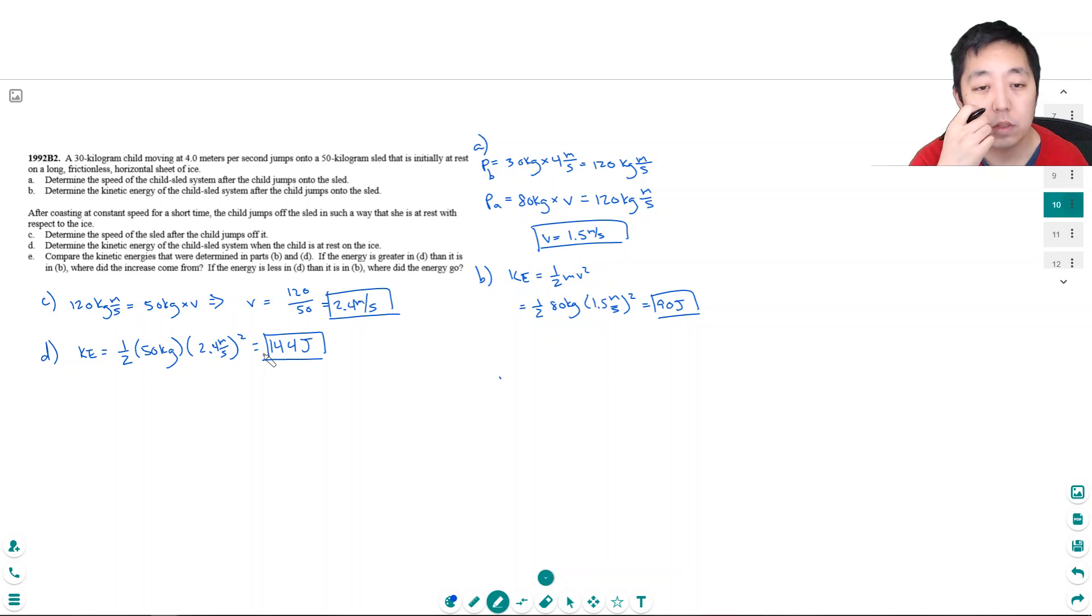If I do all the math right, 1.5 meters per second, 1.5 squared times A. So, the child's moving along and pushes off the sled in a way that now he's stopped and that accelerated the sled. The energy came from the child imparting. He had to apply a force. Yeah, that's the only thing.